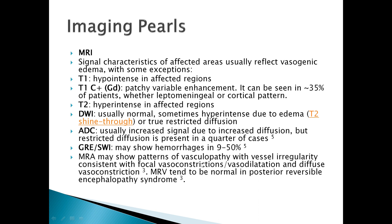On GRE and SWI, there may be microhemorrhages in 9 to 50 percent of cases. MRA may show patterns of vasculopathy — vessel irregularity, focal vasoconstriction or dilatation — appearing as a string-of-beads appearance. MRV will be normal in PRES syndrome.